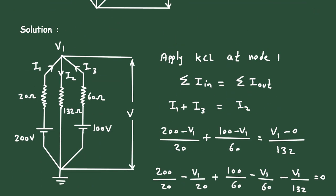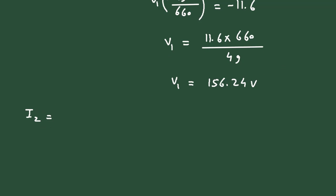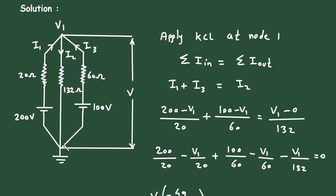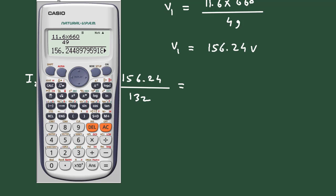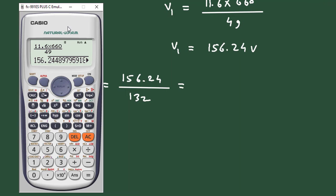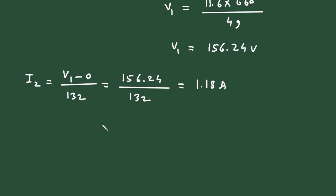Now that we have V1, we can find I2. I2 = (V1 − 0) / 132 = 156.24 / 132 = 1.18 ampere. That is, the current through the 132 ohm resistor is 1.18 A.